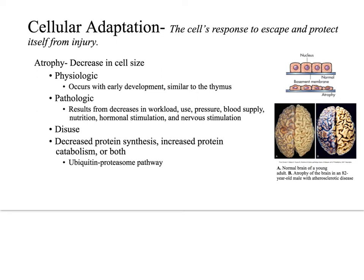Reversible injury, or degeneration, can impair cell functions, but cells can recover. Irreversible injury can take one of two forms: apoptosis, or programmed cell death, or necrosis, which is the end product of degradative and inflammatory reactions occurring after tissue death.